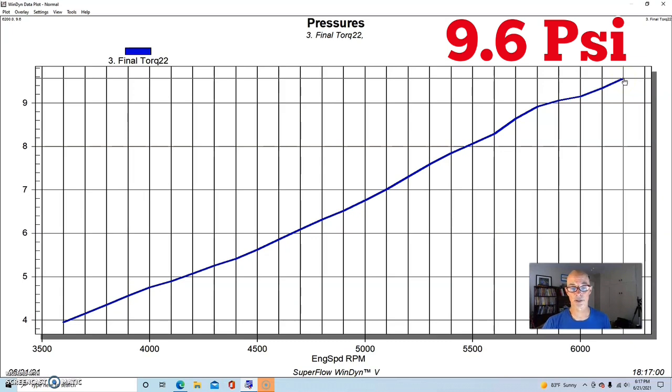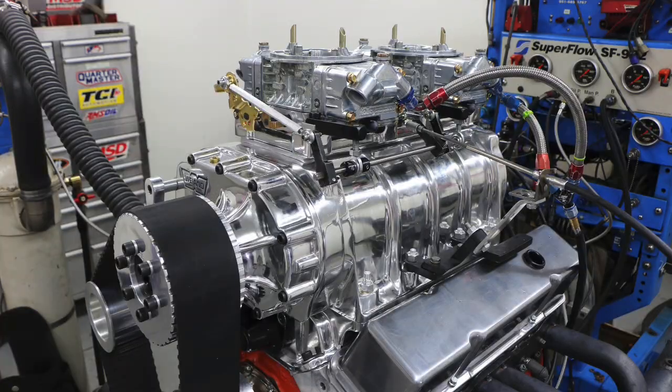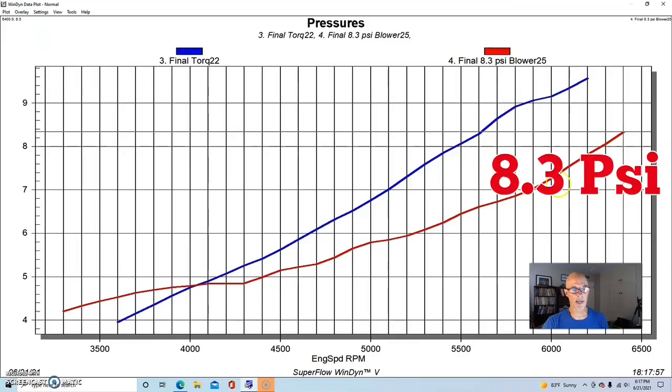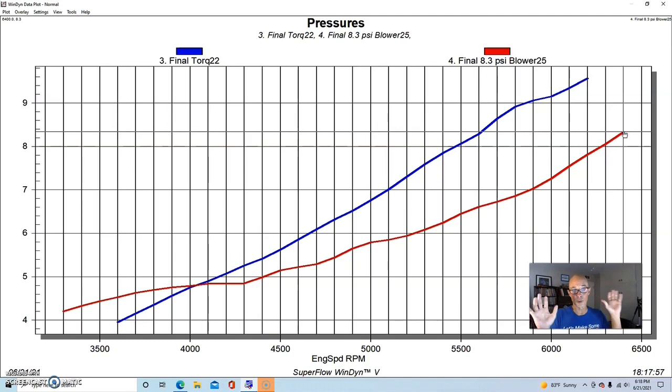Here's what happened when we added our 671. First at a peak of 8.3 pounds, started out at 4.2 and ended up at a peak of 8.3. So interestingly enough, a lot of guys think that roots blowers have this flat boost curve, like immediate boost, and they did have immediate boost down low, but it still had a rising curve.